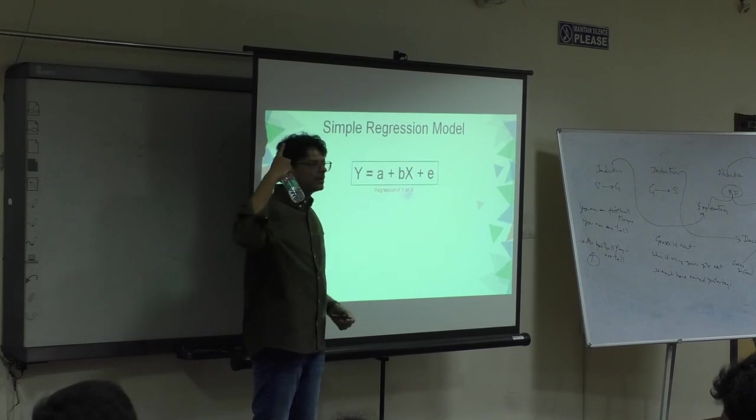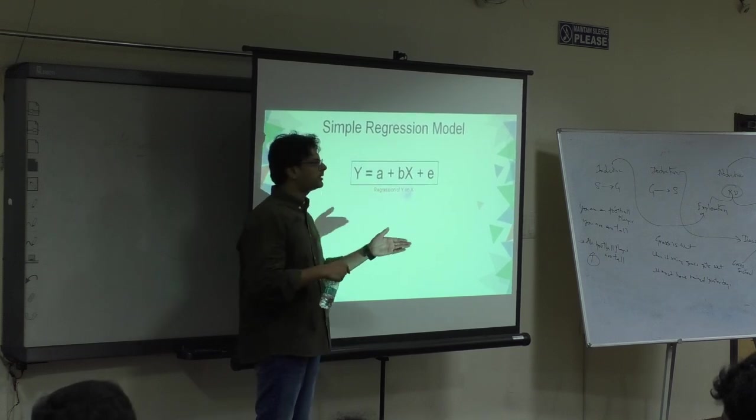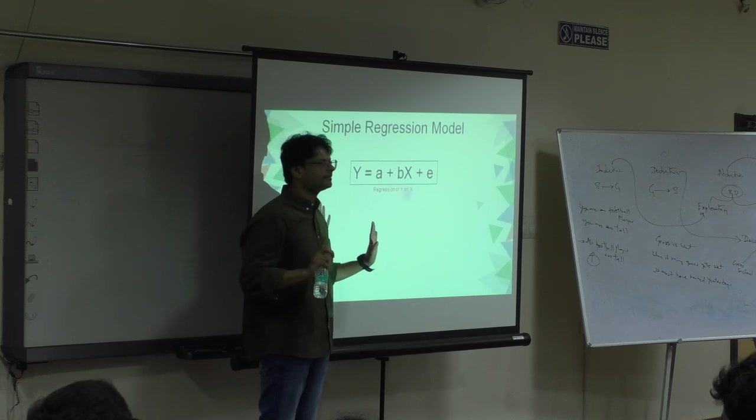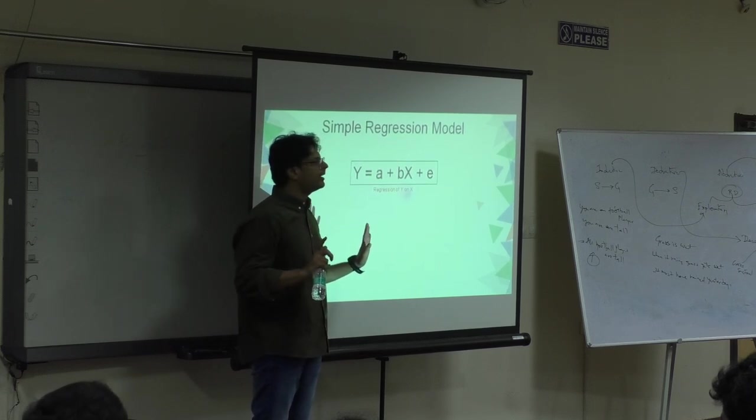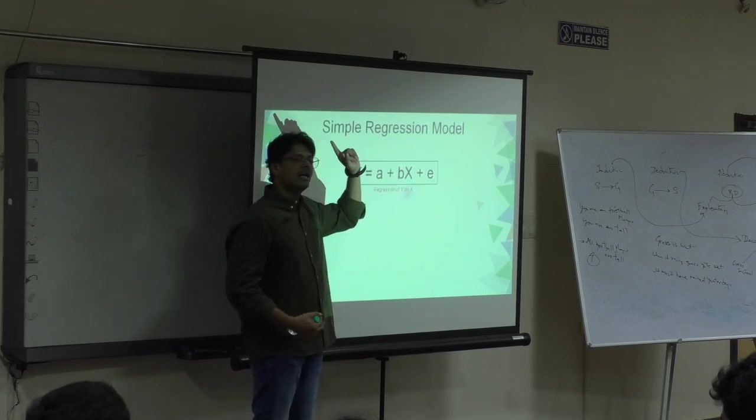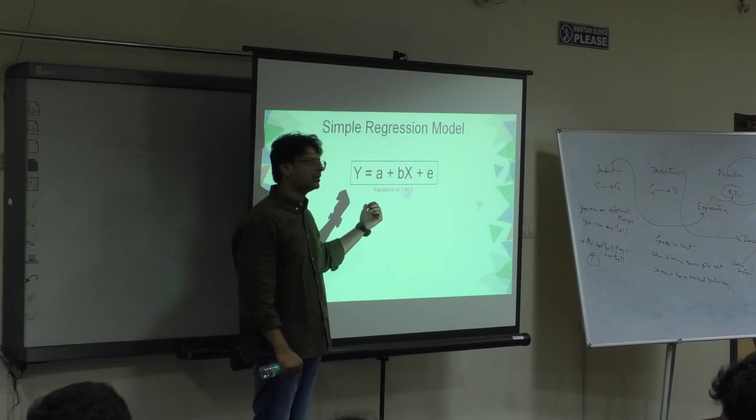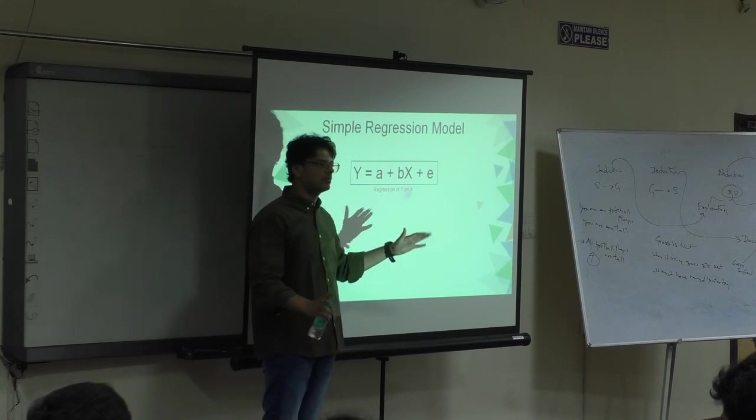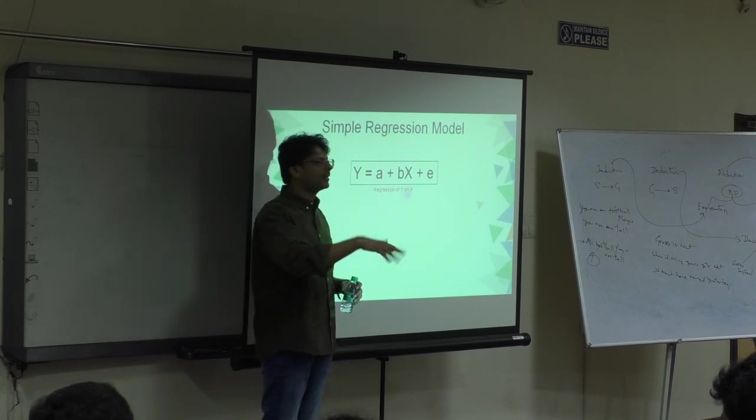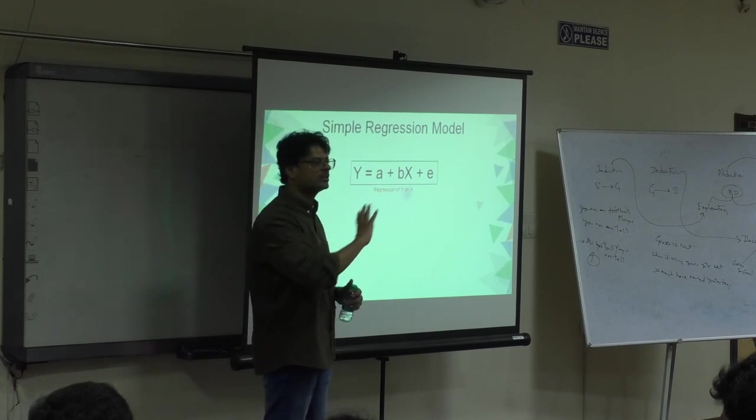It's not the case with correlation. In correlation whether I find out correlation of X to Y or Y to X both are same. Why? Because that is a relative measure. It has no units. But this is not a relative measure. This is an absolute measure. It has units, or rather units matter. The units change your value.